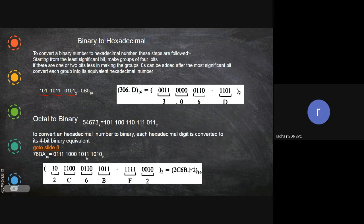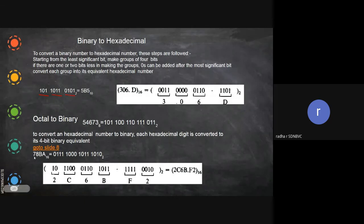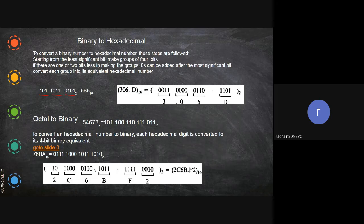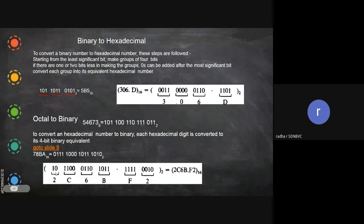For hexadecimal to binary: A is 1010, B is its 4-bit equivalent, 8 is 1000, and 7 is 0111. Since this is hexadecimal, each digit must be represented with exactly 4 bits. This is how you represent hexadecimal values in binary form.